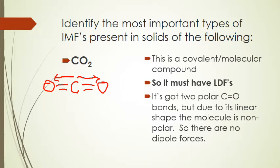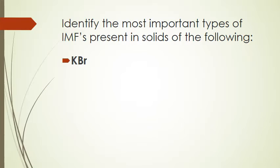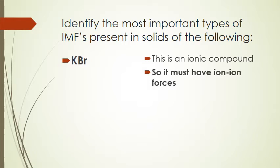KBr is made of a metal bonded to a nonmetal, which means it's an ionic compound — potassium bromide. If it's ionic, it must be made of cations attracted to anions with ion-ion forces, and we're done. Potassium bromide has a crystal lattice structure similar to sodium chloride, with a regular arrangement of potassium and bromide ions held together by strong electrostatic forces between positive and negative ions according to Coulomb's law.